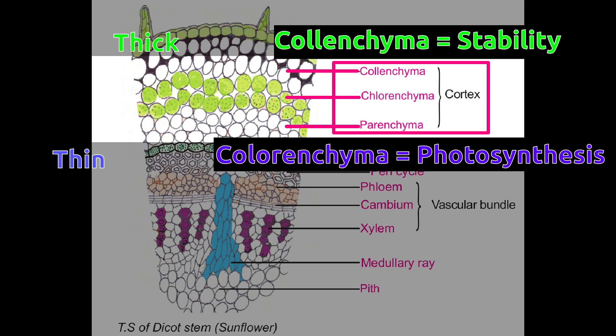Chlorenchyma is the middle part of cortex. It is a thin layer filled with chlorophyll and thus helps in photosynthesis.